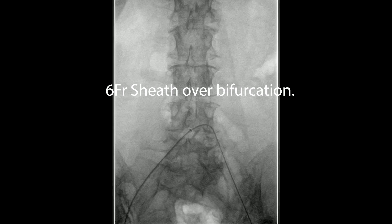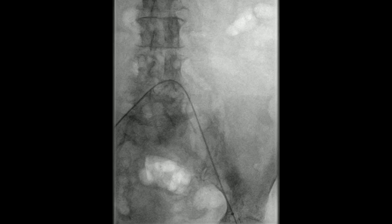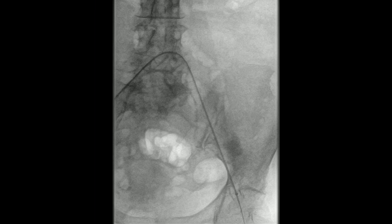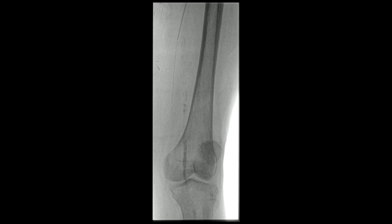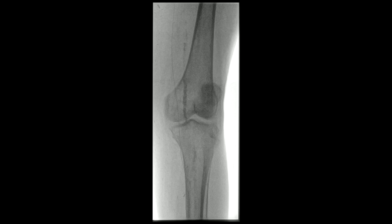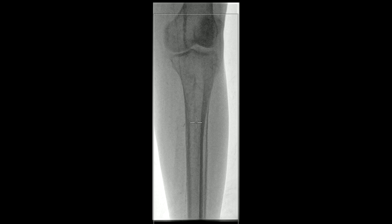At that point we can bring up a six French sheath. You want to oversize the sheath slightly — if you're using five French balloons, a six French sheath allows you to inject dye at the same time as positioning it. It's been taken up and over the bifurcation. We advance the catheter and wire down through the bypass graft. The heavy calcification is the native superficial femoral artery, which is occluded, and the wire is going down what looks like the posterior tibial artery.